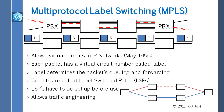A student asks if MPLS replaces IP. MPLS is what we call layer 2.5 — it sits between Ethernet and IP. Ethernet and PPP are layer 2; IP is layer 3; MPLS is layer 2.5. So the frame structure is: Ethernet header, then MPLS label, then IP header, then payload.